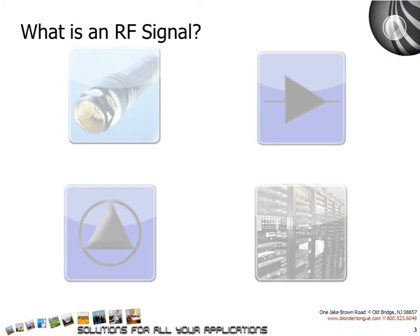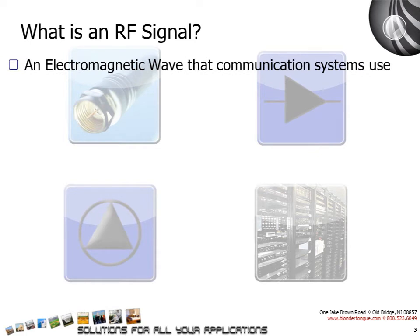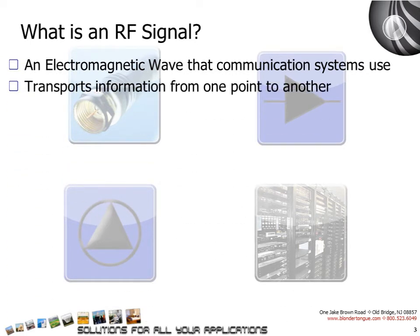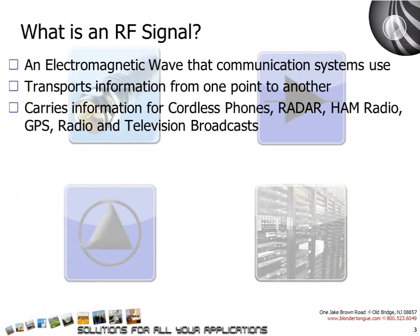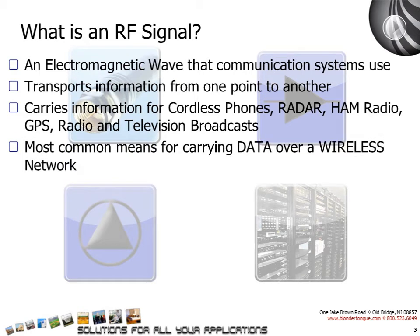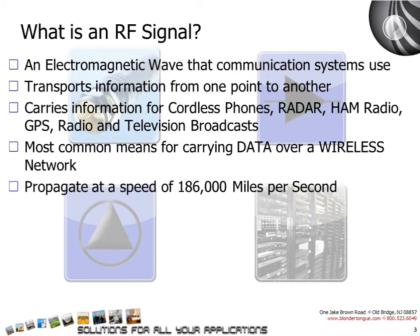What is an RF signal? An RF signal is an electromagnetic wave that communication systems use to transport information through air or cable from one point to another. They provide the means for carrying information for cordless phones, radar, ham radios, GPS, radio, and television broadcasts. In fact, RF signals are the most common means for carrying data over a wireless network. These are electromagnetic waves which propagate at the speed of 186,000 miles per second.